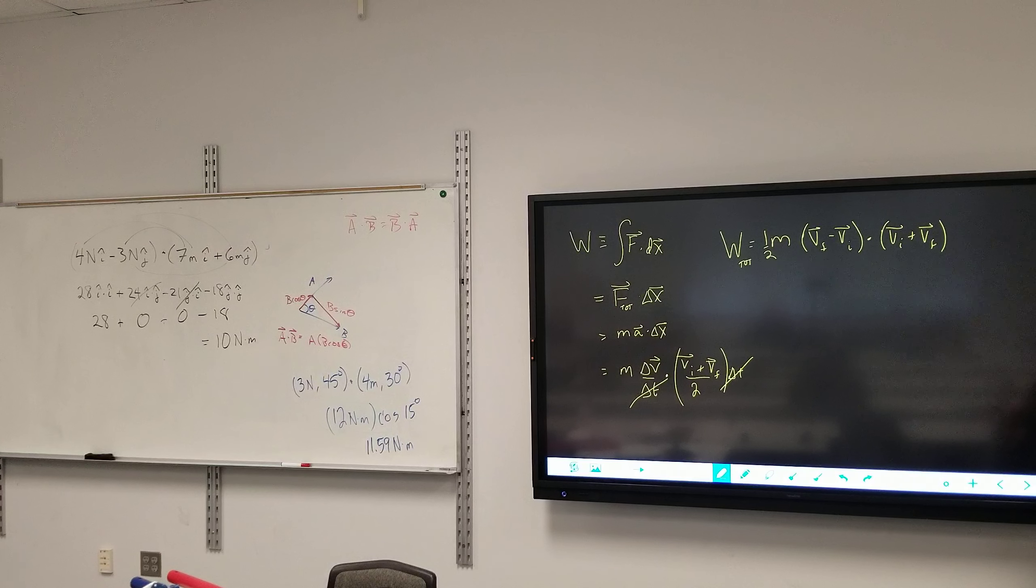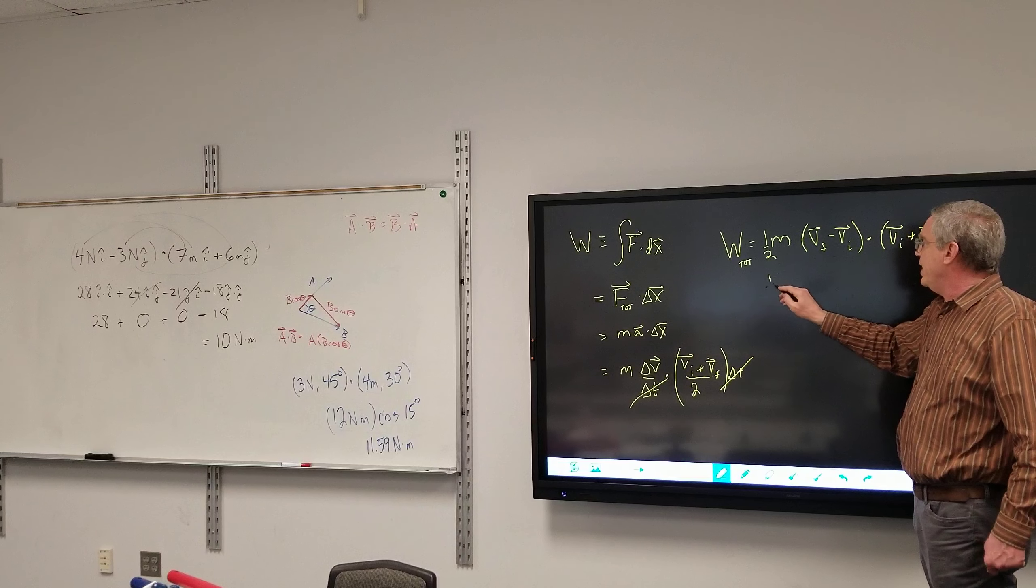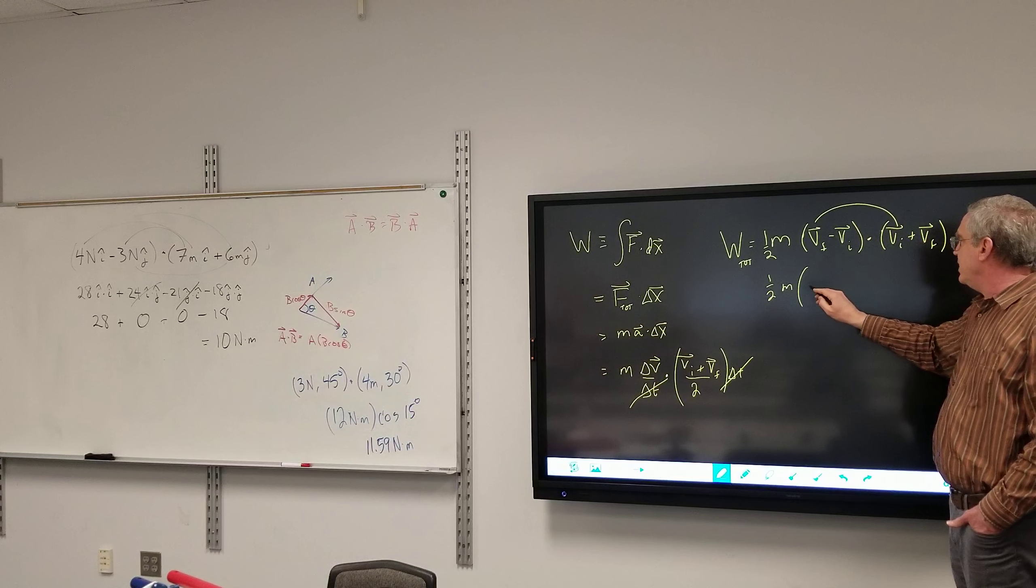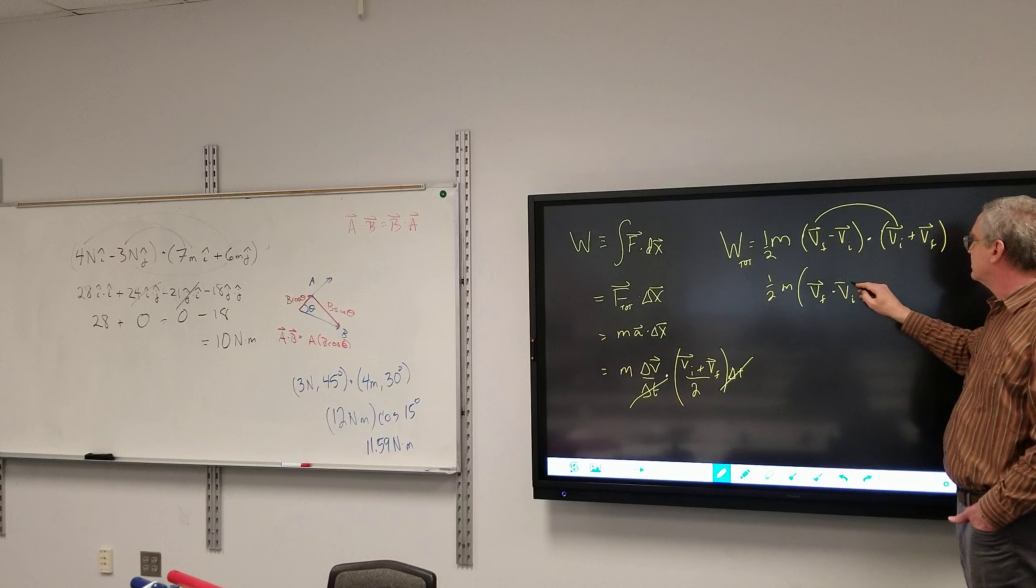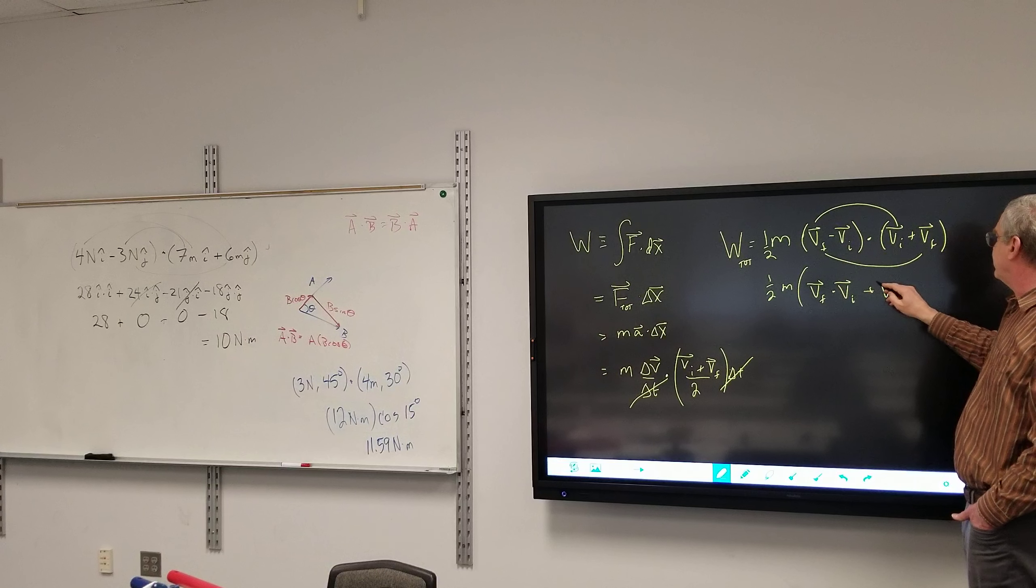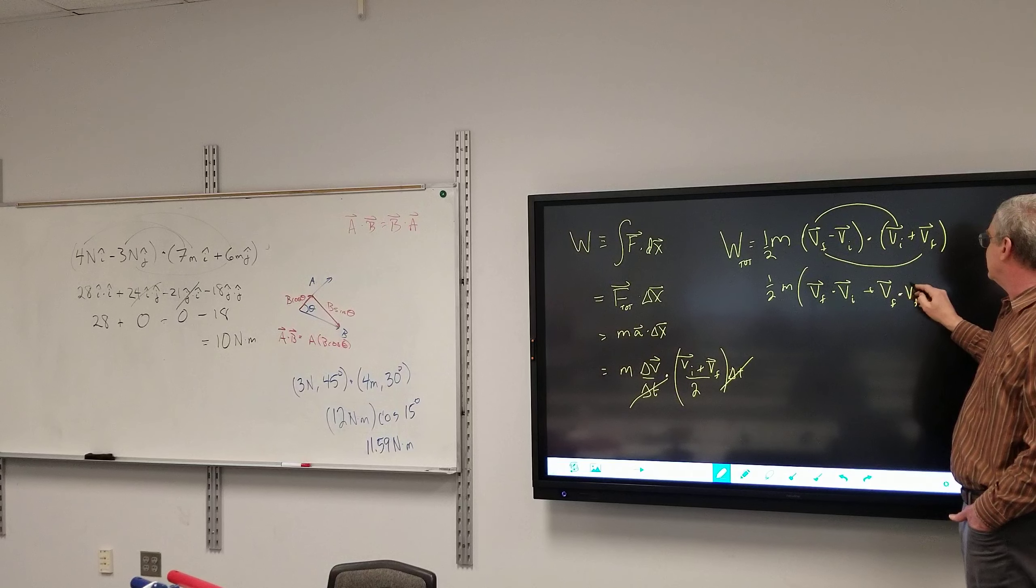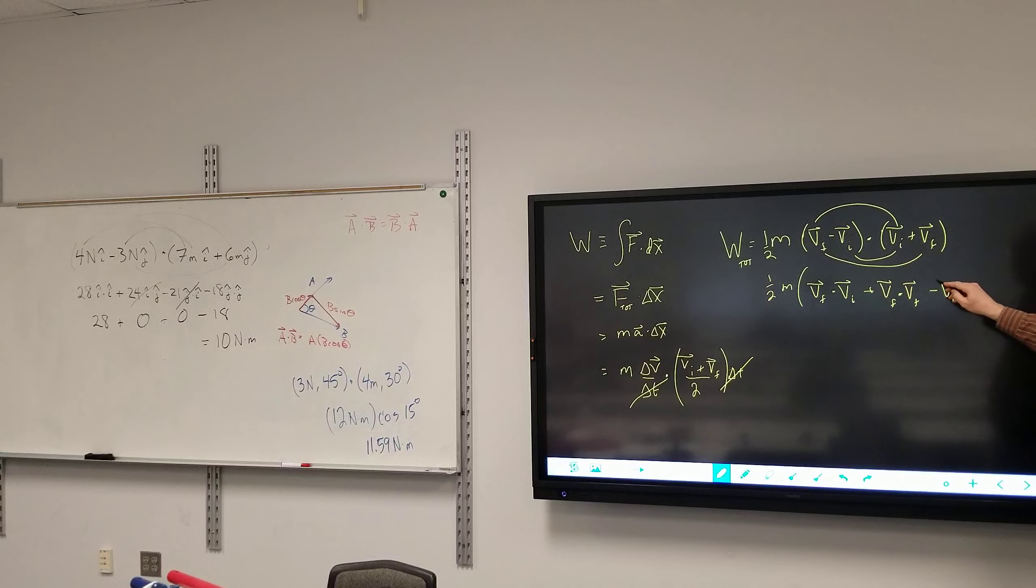I don't have directions here, so I'm going to foil. So I've got one half mass times vf dot vi, and then outer plus vf dot vf minus vi dot vi minus vi dot vf. I think that's the most we have to write in any one line, so we're going to simplify it. So I've got three terms, sorry, if I can count, I have four terms here. Terms are things that are added or subtracted. Factors are things that are multiplied or divided.